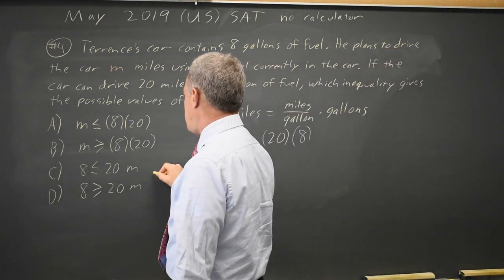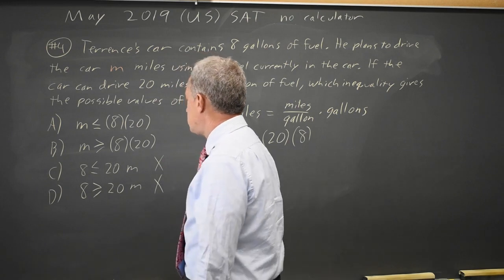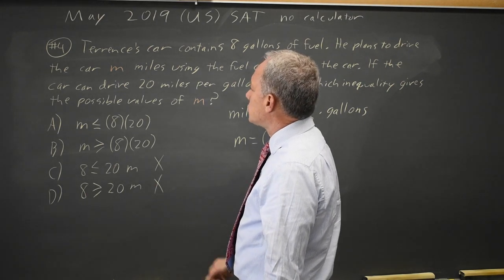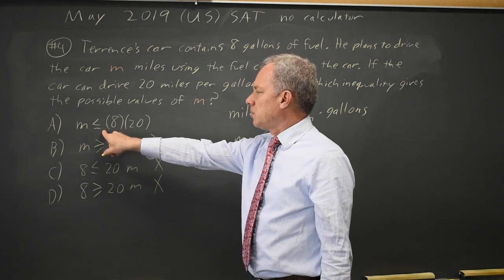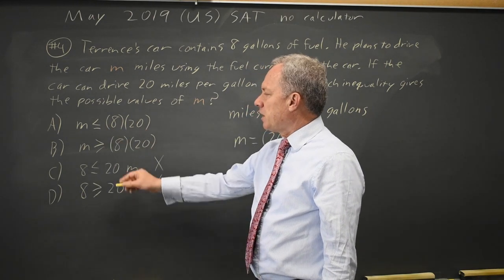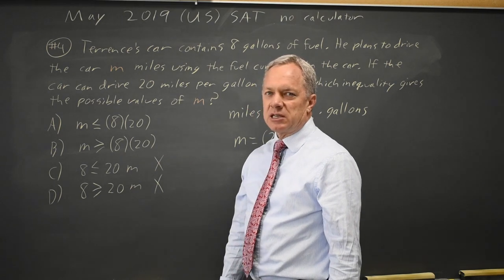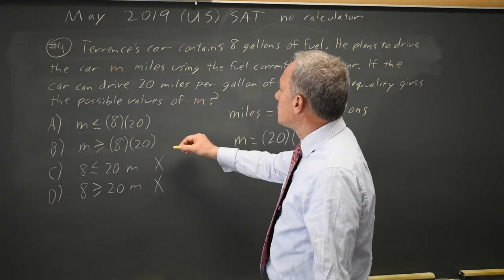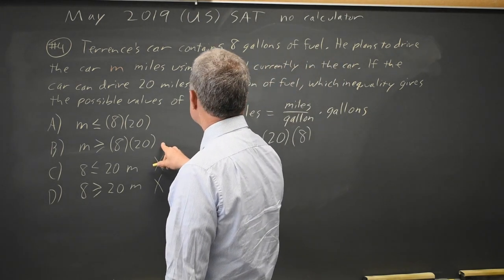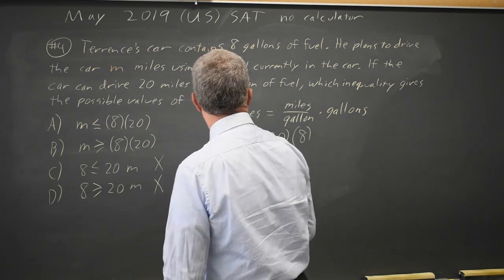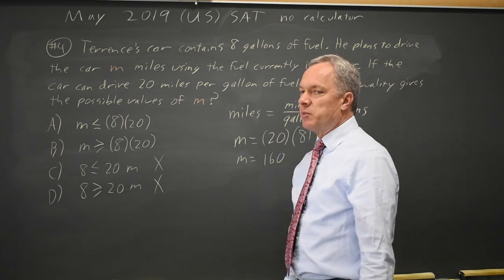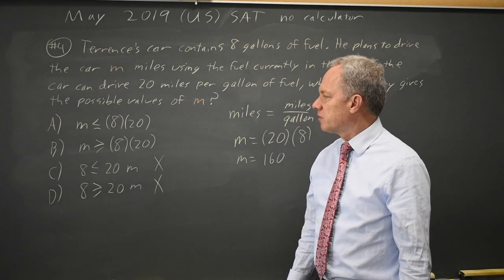The correct answer would be either A or B — C and D do not match the units. The question is do we want A or do we want B? Choice A says we can drive at most eight times 20 miles, and B says the minimum we can drive is eight times 20. B does not make sense because we know we could drive zero miles or a very small distance. With eight gallons at 20 miles per gallon, the maximum we could drive is eight times 20, which is 160 miles, and it makes sense that we could use less fuel and get fewer miles.